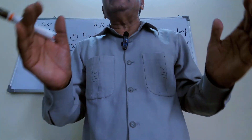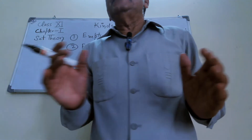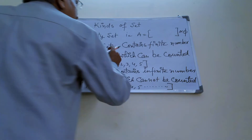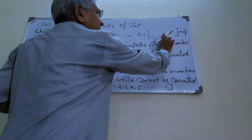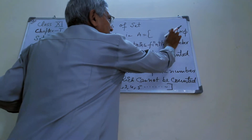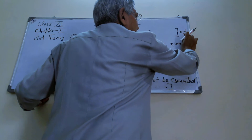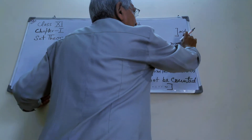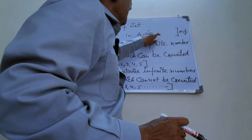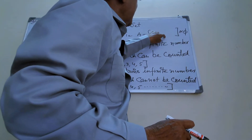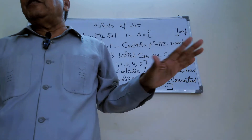An empty set has no elements. It can be written as empty braces — there is no element between the braces. It can also be written as phi (φ). Phi is the notation of the empty set. So an empty set can be written as A equals empty braces, with no element inside.